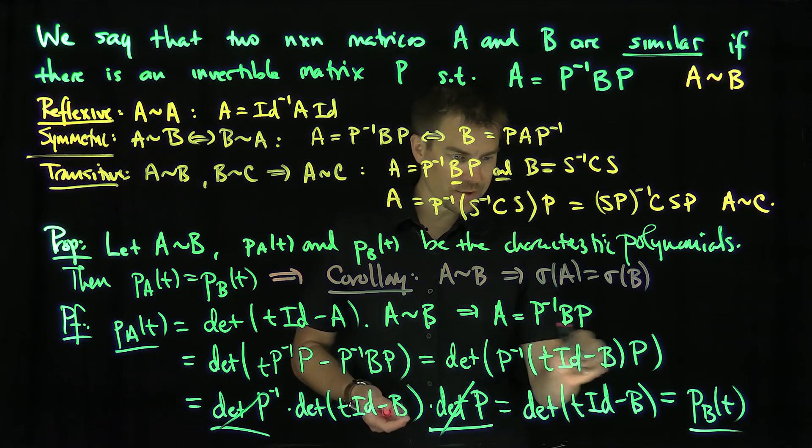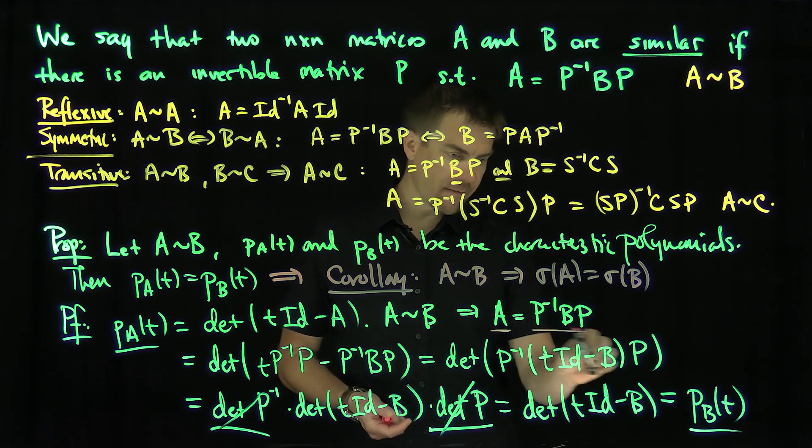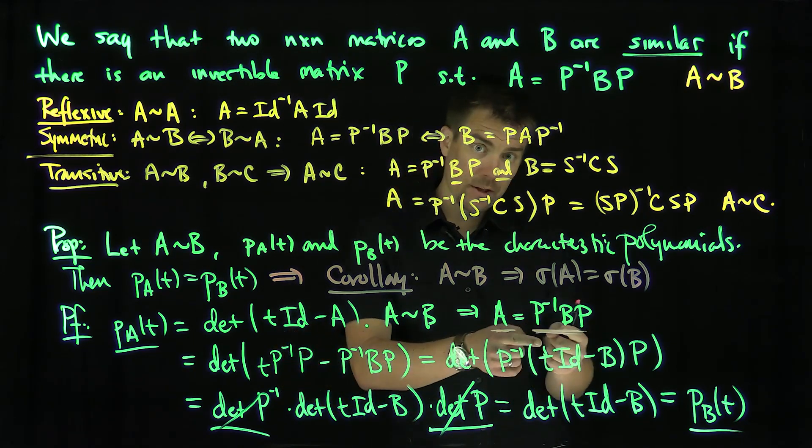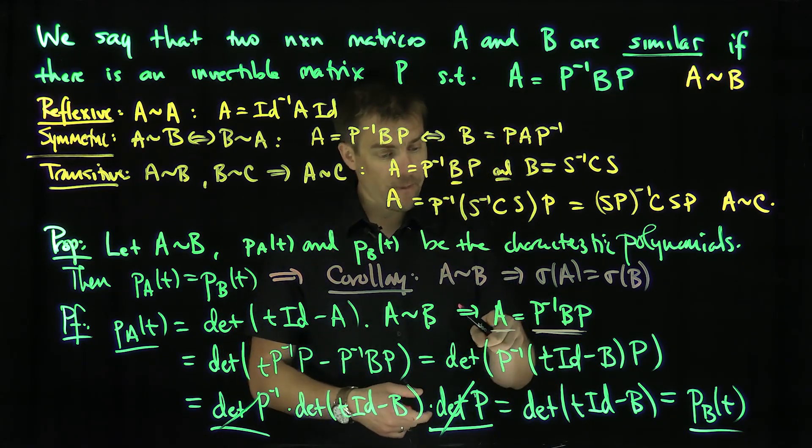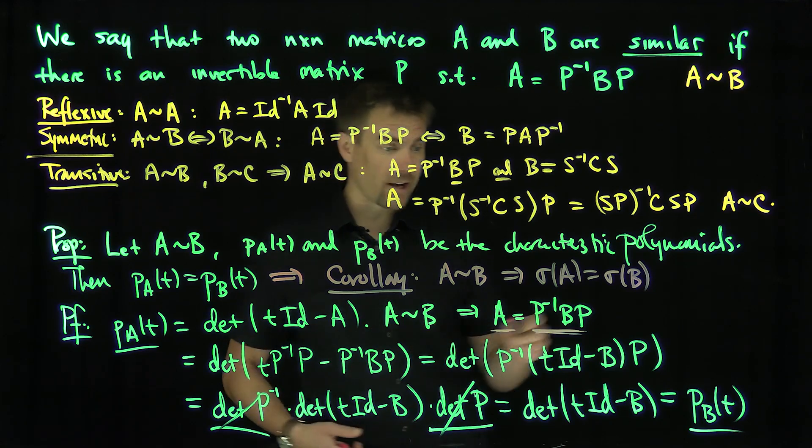We can also show other properties of similar matrices. For example, this structure will say that the rank of A is greater than or equal to the rank of B, since matrix multiplication can only contract the rank.